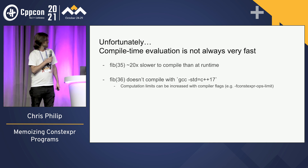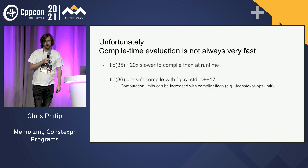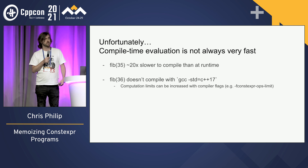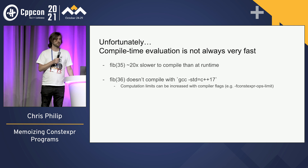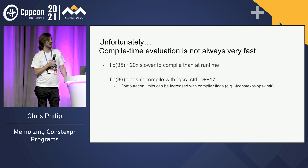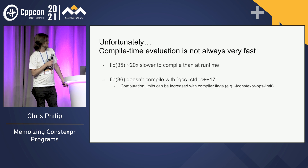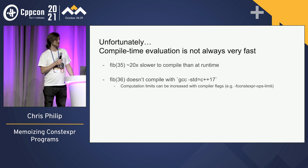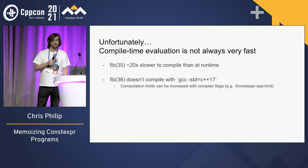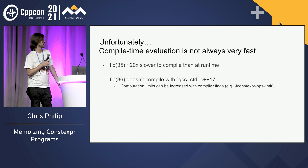Unfortunately, compile-time evaluation is not very fast. For example, if you call Fibonacci of 35 with this trivial recursive implementation, it's about 20 times slower to compile than it is to just evaluate that recursion at runtime. And it gets worse — if you try and call Fibonacci of 36, it doesn't even compile, because the compiler decides you're probably never going to terminate, so it shuts you off early.